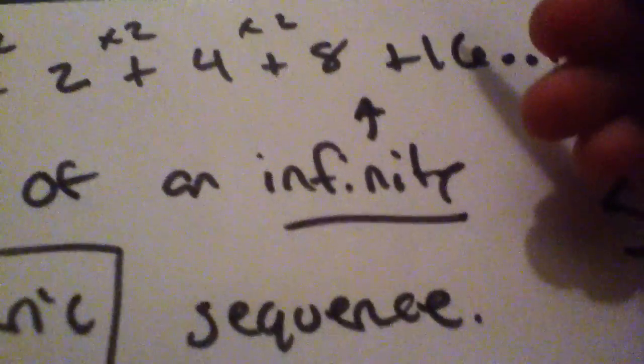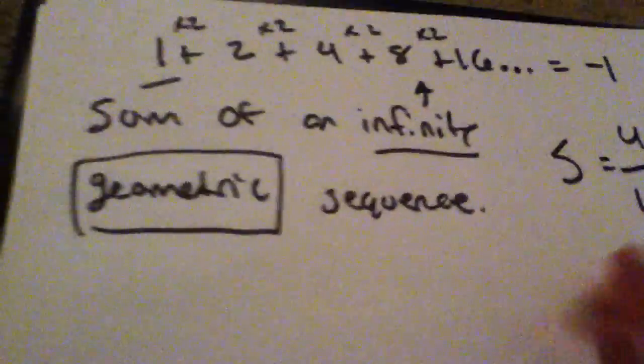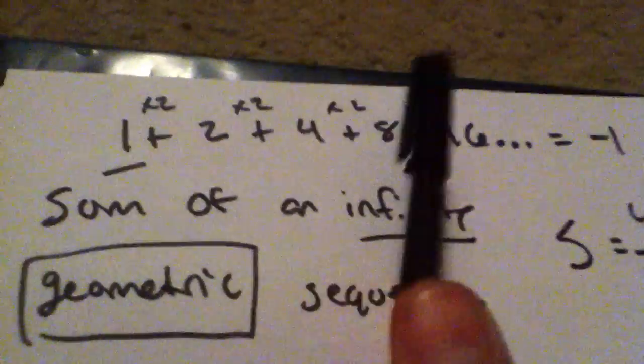For example, 1 times 2 equals 2, 2 times 2 equals 4, 4 times 2 equals 8, and 8 times 2 equals 16. That is the R value.